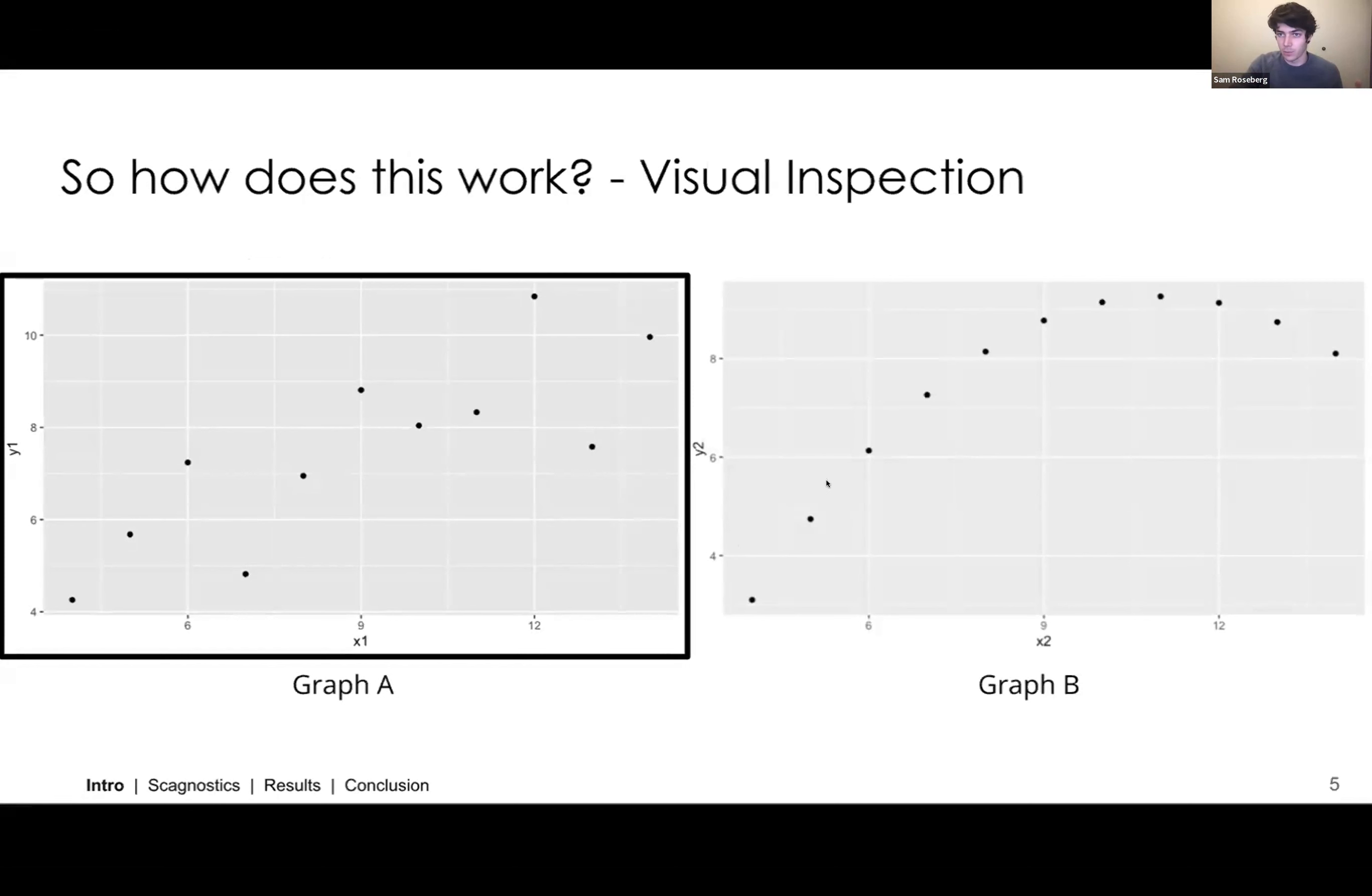The problem arises when we use the more numerical approach of, okay, what is the correlation of these two? How well do these fit an actual line? And we get that both of these two values from the Anscombe data set have 0.816 correlation or R value. And there are two other graphs in this data set that have similar conclusions.